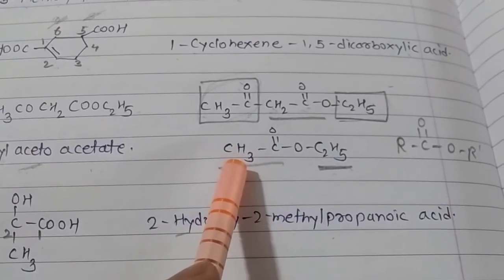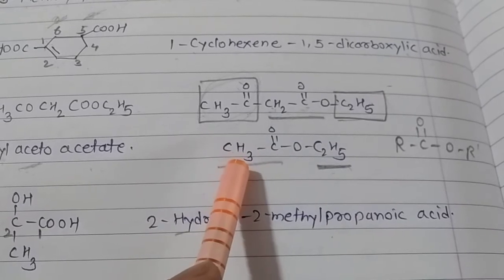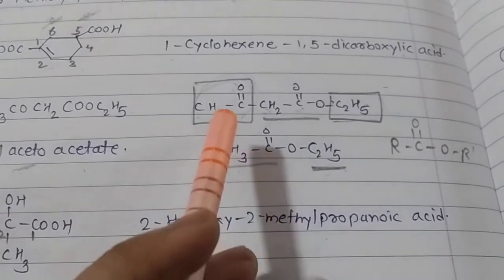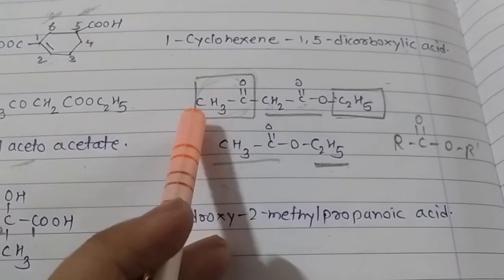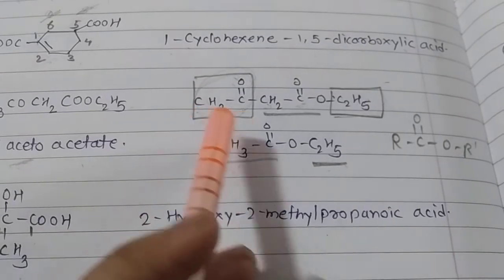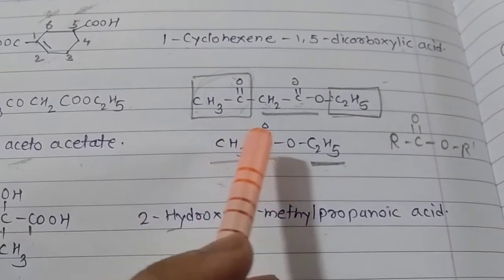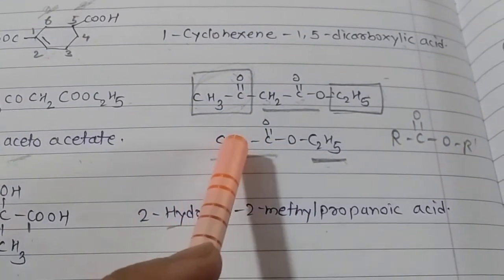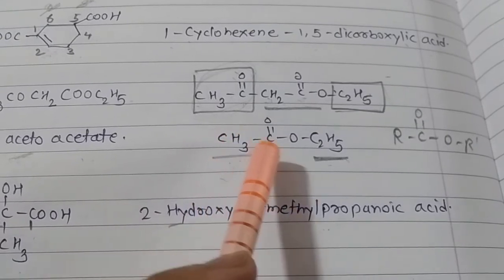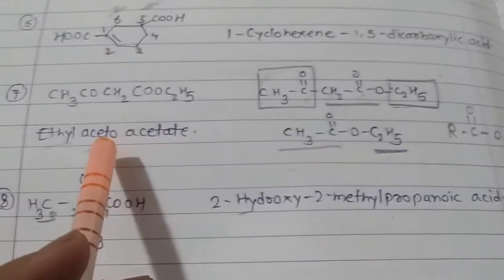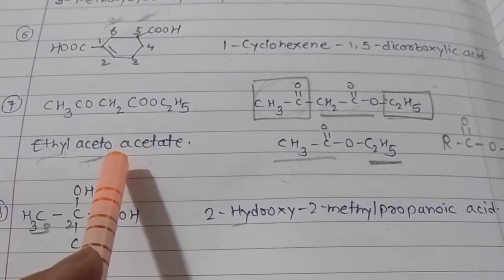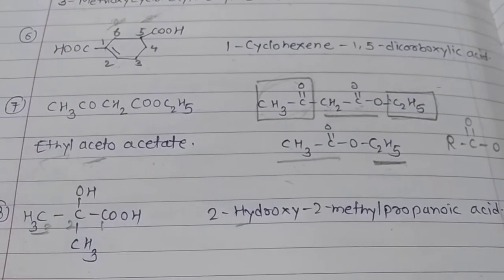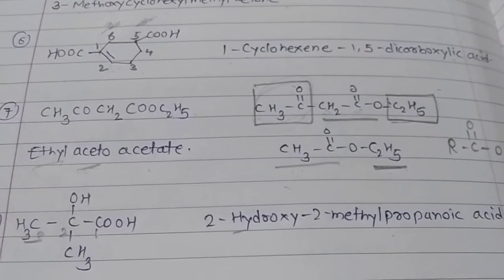There are three hydrogens here, and only one hydrogen is replaced by COCH3, the acetyl group. The other things are the same — one hydrogen is replaced by the acetyl group. So it becomes ethyl acetoacetate.